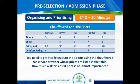In this example, we have a table with the prices of a chauffeured car hire provider — a provider that rents out cars with a driver. We have five different car brands listed, along with number of doors, number of seats, price per hour for hire, and the comfort rating of the car. A typical test question would be: you need to get nine colleagues to the airport using this service. How much will this cost if price is of utmost importance to you?